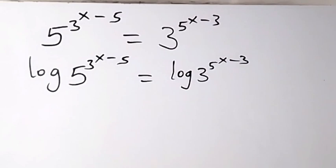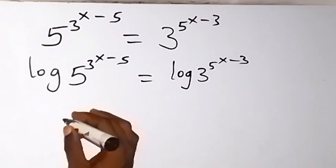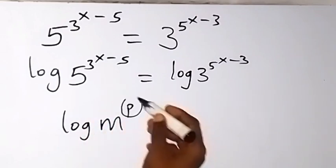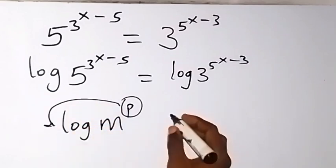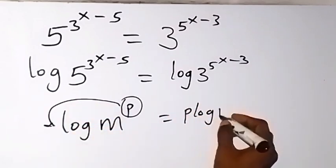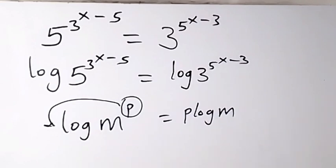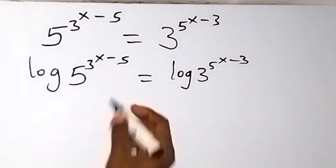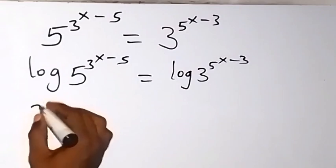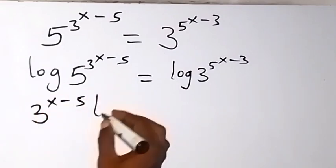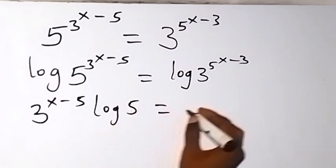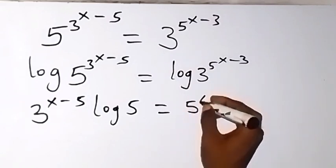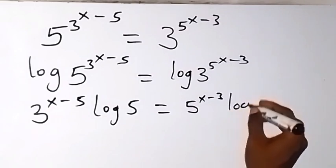And from there, from the law of logarithms, when we have log m raised to the power p, this power p can come to the front, and this will be p·log m. So when we apply that here, the power comes to the front. We have 3 raised to the power x minus 5, then log 5, which equals — on this side — 5 raised to the power x minus 3, then log 3.